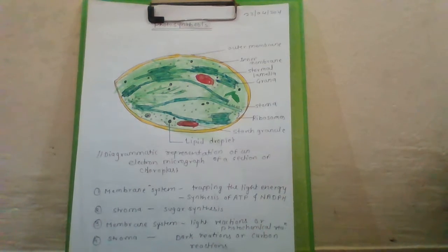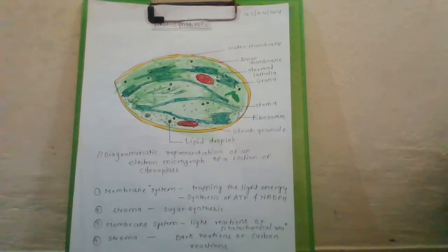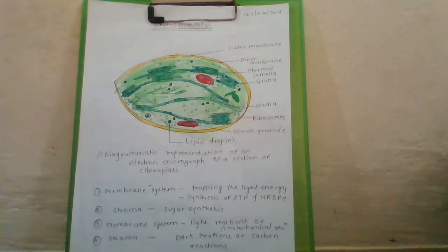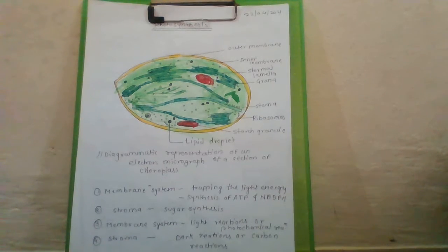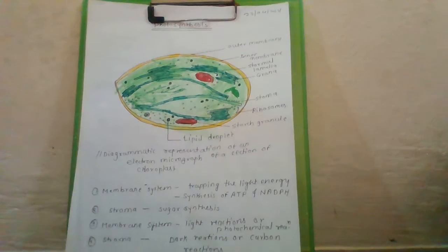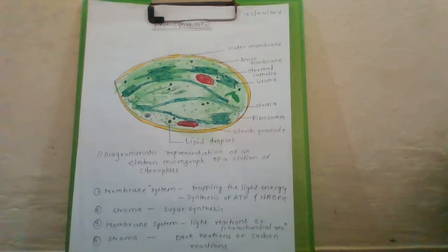The mesophyll cells in our leaves have a large number of chloroplasts. The cells which contain chloroplasts are called mesophylls. Usually the chloroplasts align themselves along the walls of the mesophyll cells such that they get the optimum quantity of incident light.